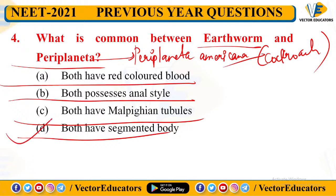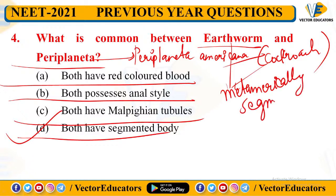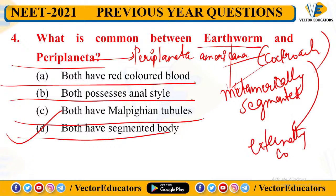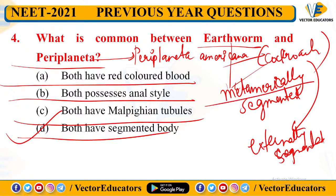The correct answer is segmented body. The earthworm has a segmented body and so does Periplaneta. The earthworm is metamerically segmented — meaning segments are divided in a linear, equal manner. The cockroach is only externally segmented. Both share the characteristic of segmented body, so D is the correct answer.